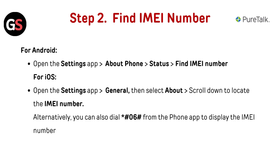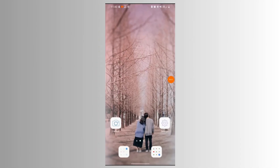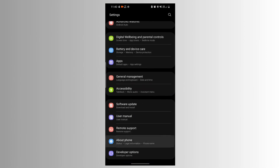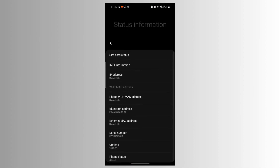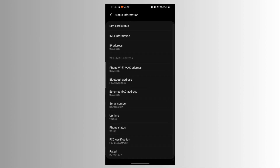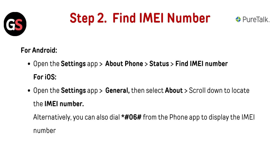How to find your IMEI number: For Android, open the Settings app, go to About Phone, then Status, then find the IMEI number. For iOS, open the Settings app, go to General, then select About, and scroll down to locate the IMEI number. Alternatively, you can dial *#06# from the phone app to display the IMEI number.